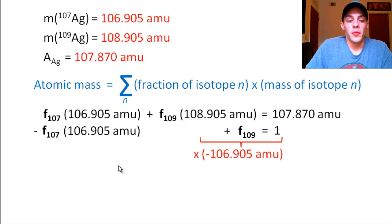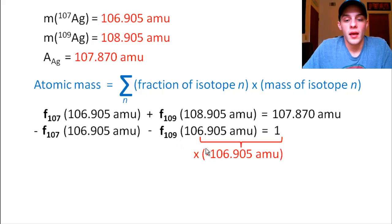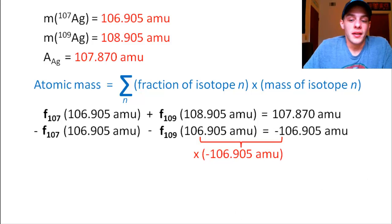If we do the same thing with this term up here, that's going to give us f₁₀₉ times 106.905 amu. And then anything multiplied by 1 is simply whatever that thing is. So that's going to be negative 106.905 amu on the right-hand side of the equation.